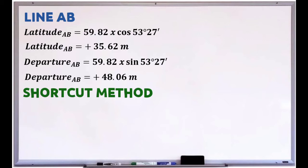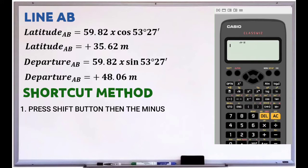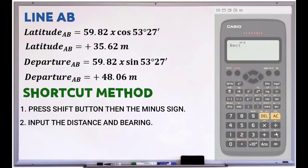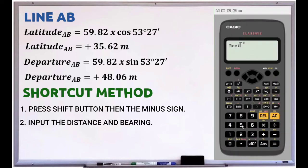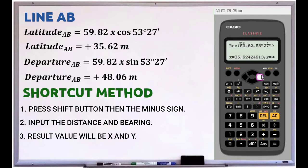The shortcut method I mentioned earlier is how to solve the latitude and departure using calculator techniques. The first step is to press the shift button then the minus sign (REC function). Next, input the distance and the bearing of the corresponding line. The result values in the calculator will be X and Y — the X value will be the latitude and the Y value will be the departure.